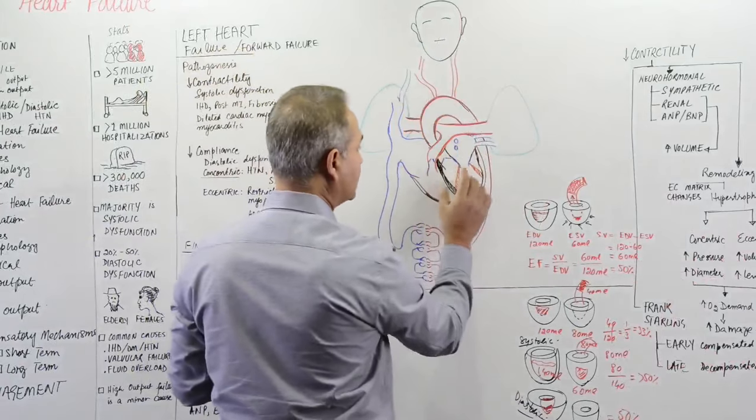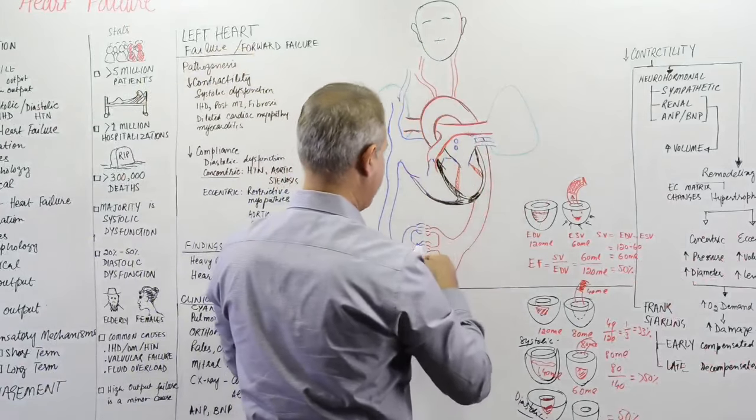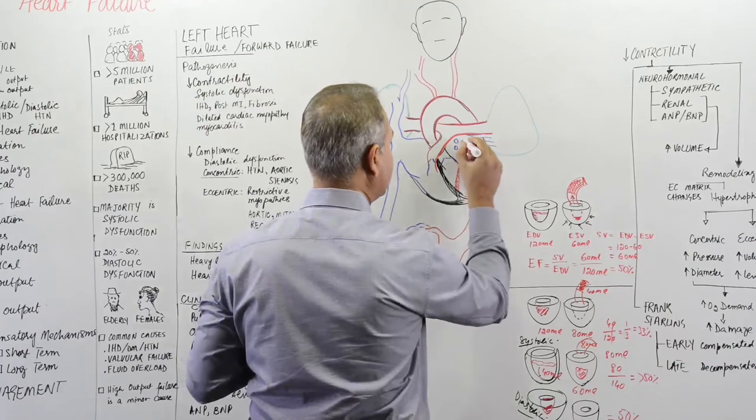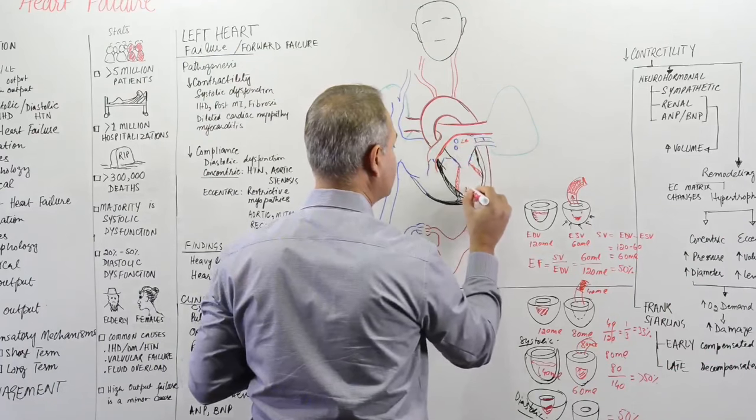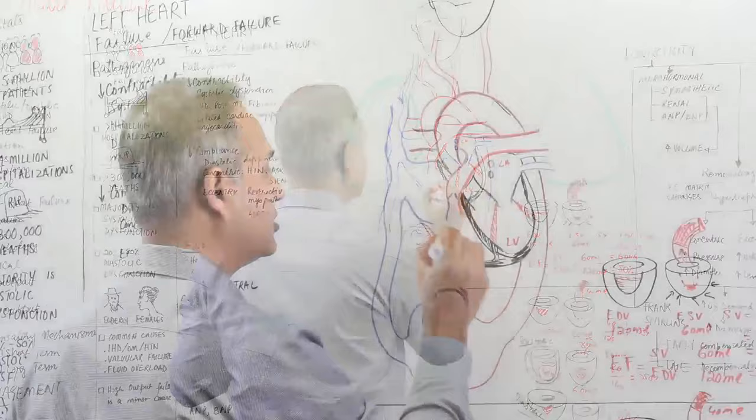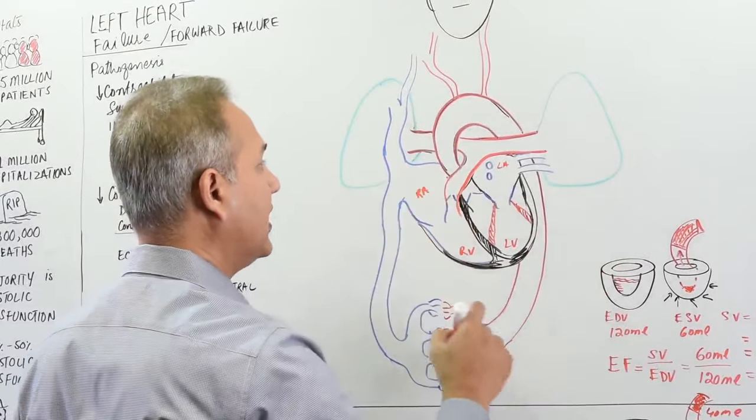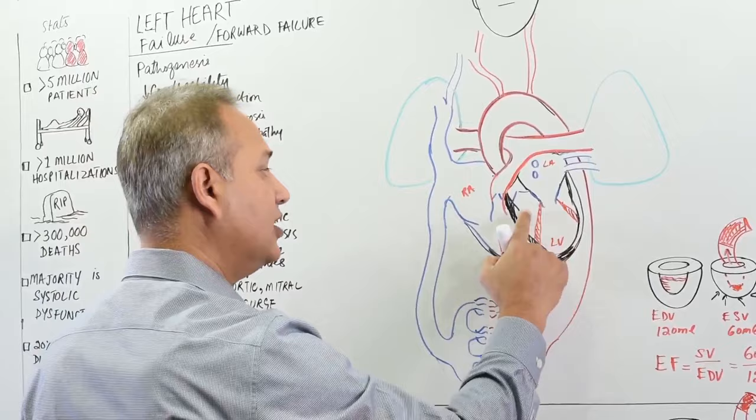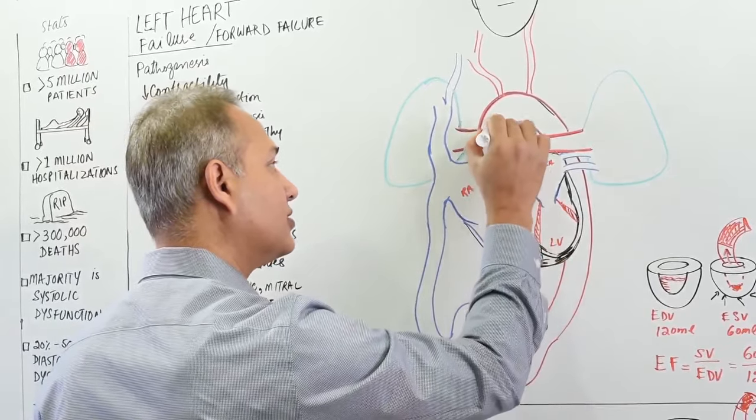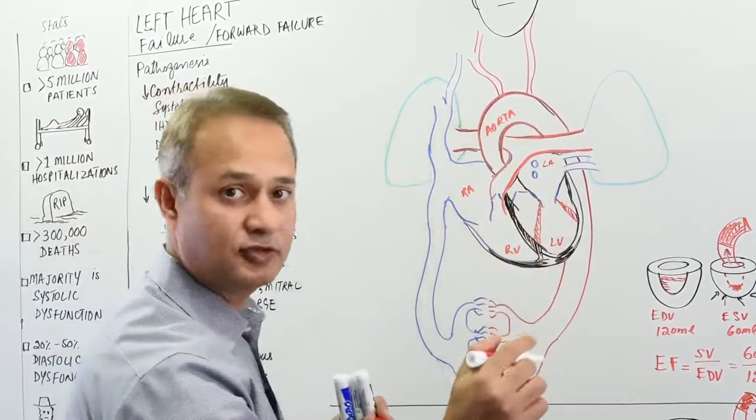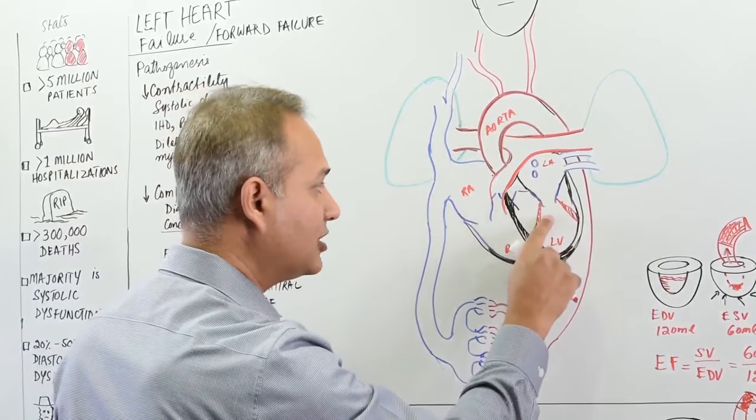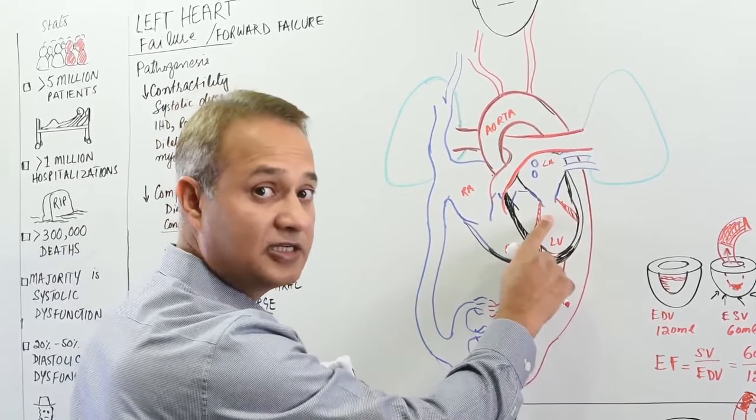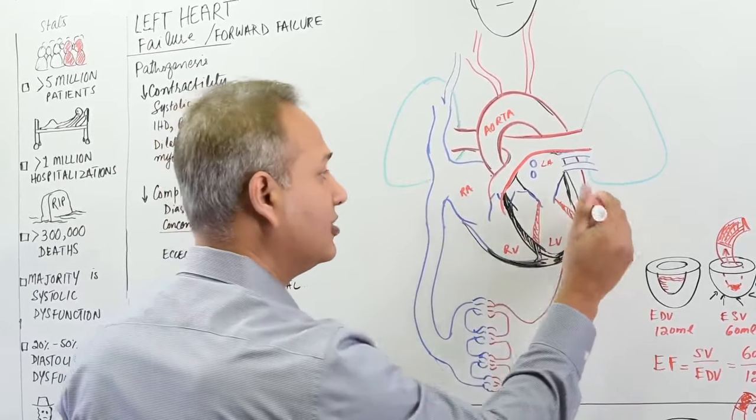So let us say here is our heart. This is the left atrium. This is left ventricle. This is right ventricle, right atrium, and the circulation is this: this is the left ventricle. Blood comes in here. From here it goes to aorta. Keep an eye on a couple of valves over here. This is the atrioventricular valve on the left side, that is the mitral valve or bicuspid valve, right?